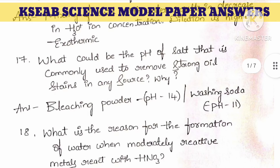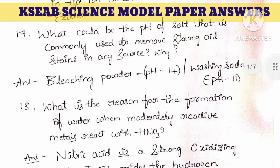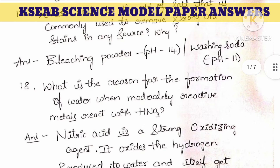17th question: what could be the pH of a salt that is commonly used to remove strong oil stains? Two salts were mentioned in the previous video. Taking bleaching powder and washing soda — the pH of bleaching powder is 14, and the pH of washing soda is 11.